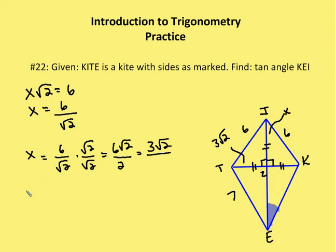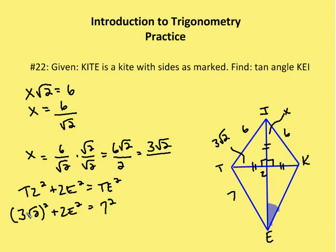We know TZ² plus ZE² equals TE², which is 7². TZ squared, I have (3√2)² plus ZE², which we don't know and we're trying to figure out, equals TE² which is 7². This leaves me with 18 plus ZE² equals 49. Now ZE² equals 31, so ZE equals ±√31. We know that the length needs to be positive, so ZE is going to be √31.